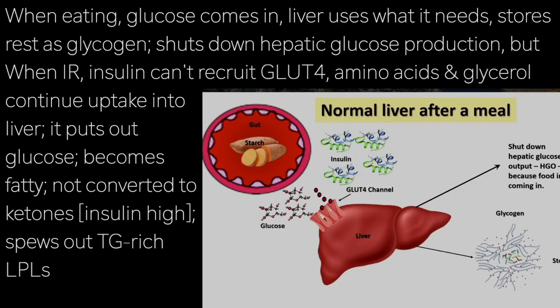When you eat a meal, glucose is coming in. The liver can use what it needs and then store it as glycogen, and because glucose is coming in, hepatic glucose output should get shut down.